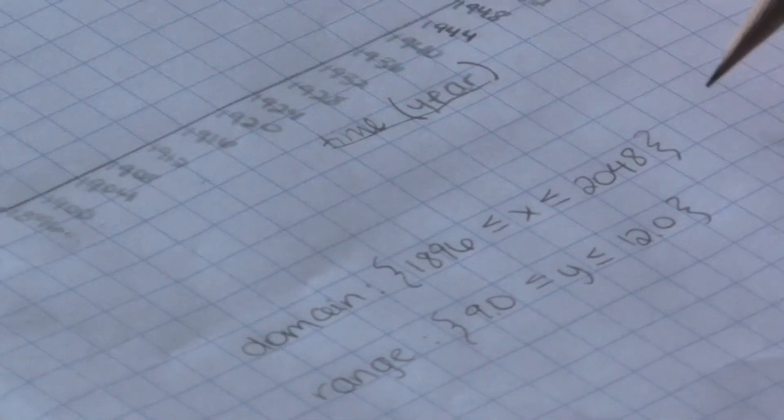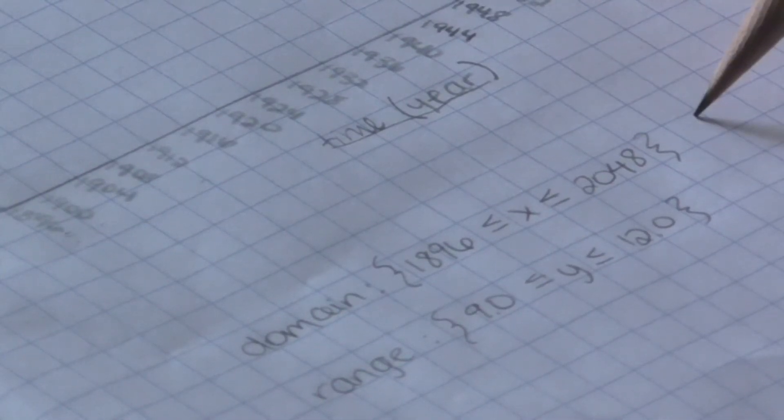We think that a reasonable domain would be 1896 is less than or equal to x is less than or equal to 2048. We said that because the first Olympics took place in 1896, and we think that the linear pattern will stay in place until about the 2048 Olympics, when we believe that human ability will begin to level out.